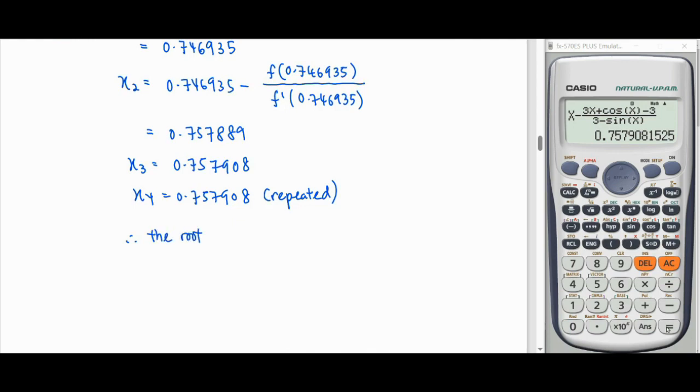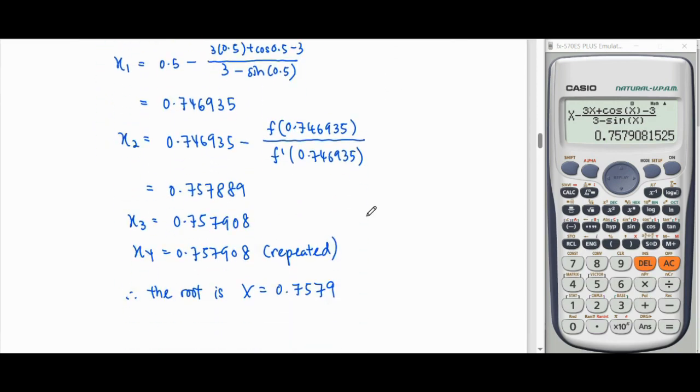The root for this non-linear equation is x equals to 0.7579, which is correct to 4 decimal places.